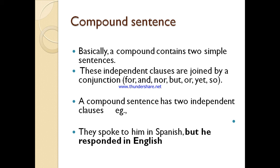two simple sentences. Both of these independent clauses are joined by a conjunction. They can stand by themselves. Compound sentences are usually joined by the conjunctions: for, and, nor, but, yet, and so. Each sentence expresses a complete thought. For example: 'They spoke to him in Spanish, but he responded in English.'